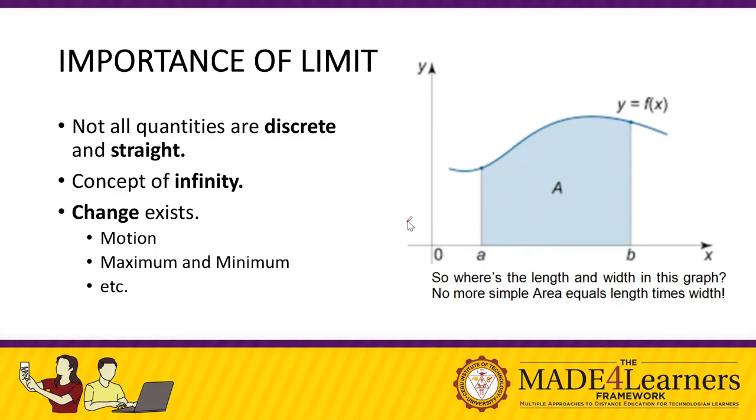Now that we understand the concept of limit in our day-to-day scenario, let's try to look at the importance of limit as a concept in our life or in mathematics. First, we need to realize that not all quantities are discrete and straight. When we say discrete, it's whole numbers, like 1, 2, 3, 4, or something complete. There are actually things that are not complete or we cannot actually find the end. We call those things as continuous. The opposite of discrete is continuous. It's not whole numbers, not by parts, and not all things are straight.